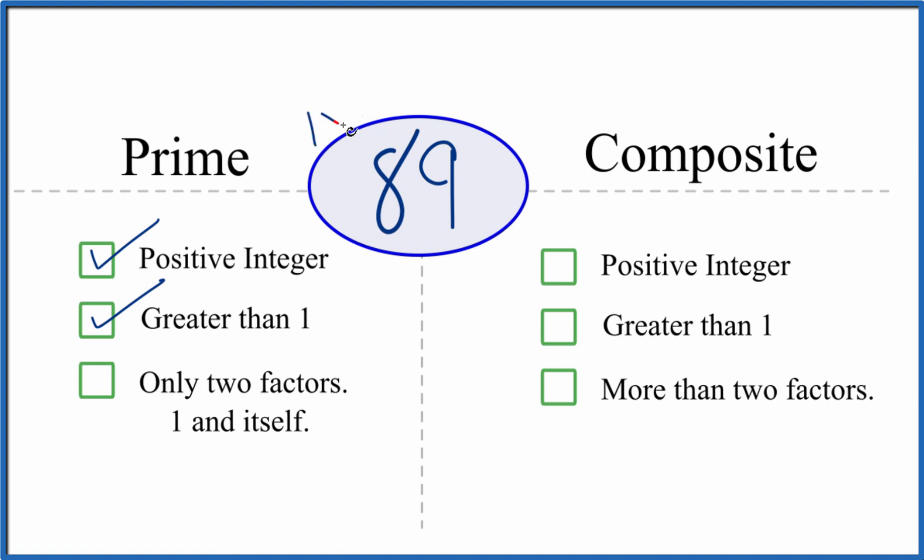We know that 1 times 89 equals 89. Those are the two factors there. But are there any more? Turns out that these are the only factors that go evenly into 89. So there are only two factors. That means 89 is a prime number.